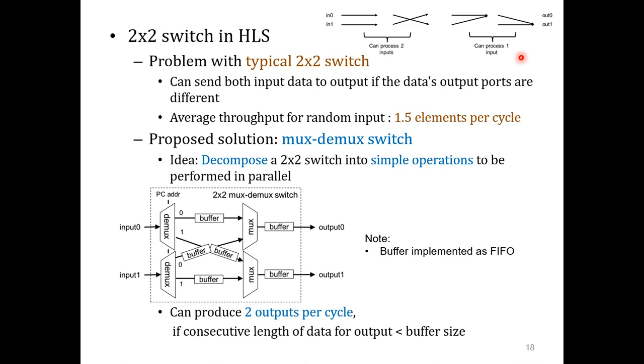So we propose what we call a MUX-DEMUX switch. The idea is to decompose a 2x2 switch into simple operations that can be performed in parallel. Depending on the output PC address, a DEMUX module stores the incoming data in the corresponding buffer. At the same time, a MUX module collects the data in round-robin. As long as the consecutive length of data for a particular output port is less than the buffer size, this switch can produce almost two output elements per cycle. So basically, we are trading off buffer with performance.